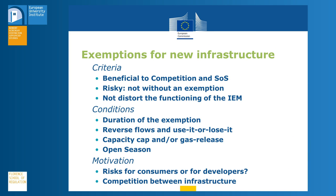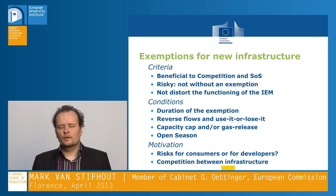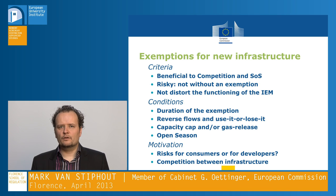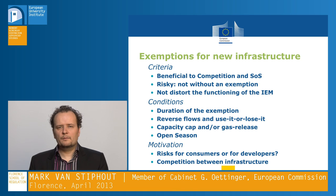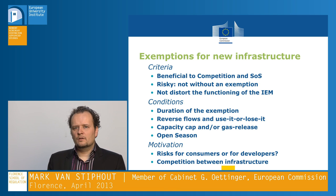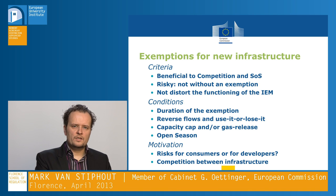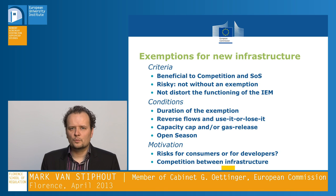So — exemptions. The normal system involves regulated tariffs and regulated third-party access, but there is also a possibility to apply for exemptions from those rules for new projects that are particularly risky and would not be developed within the regulated system. To qualify, you have to meet certain criteria: first the risk criterion, but also your project has to be beneficial to security of supply and competition, and must not distort the functioning of the internal market. These criteria are tested first by the national regulator and then by the Commission. A project developer goes to the regulator, proves the case, and then the regulator decides — they can impose conditions or refer it to the Commission, which then gives its opinion and may impose conditions or refuse.